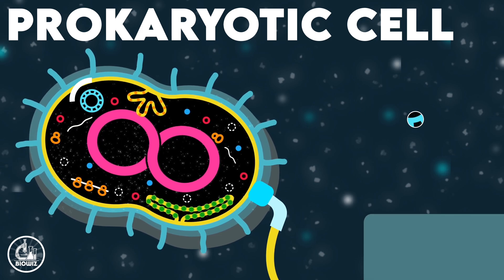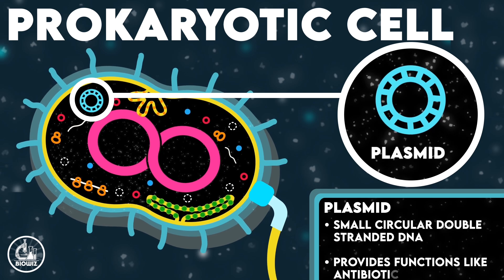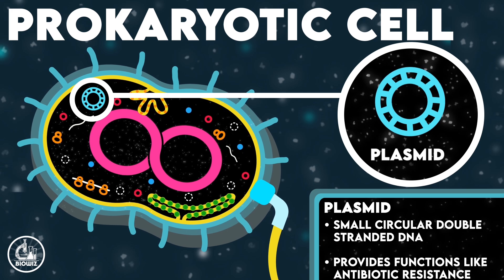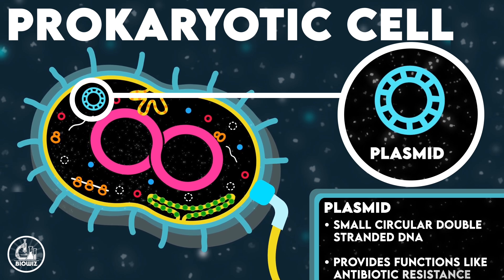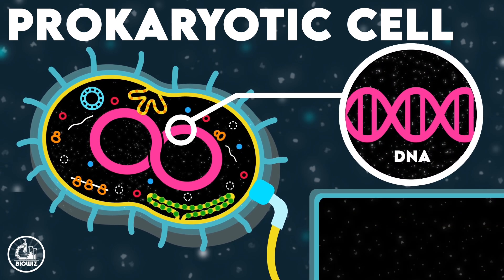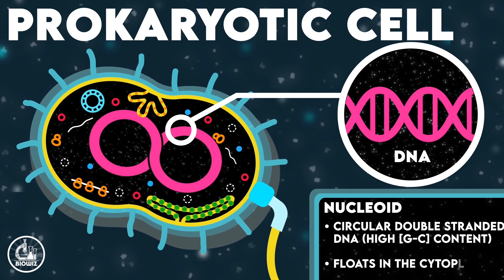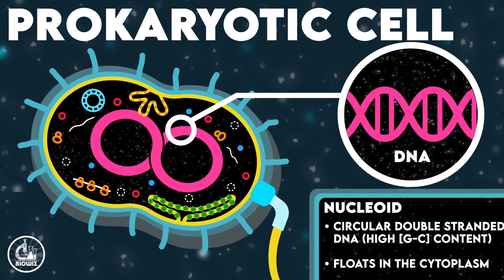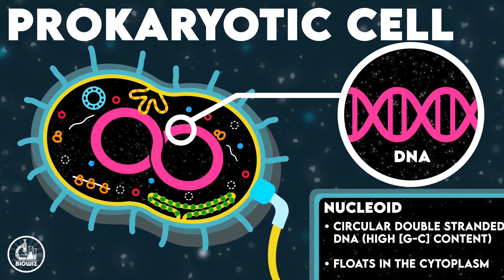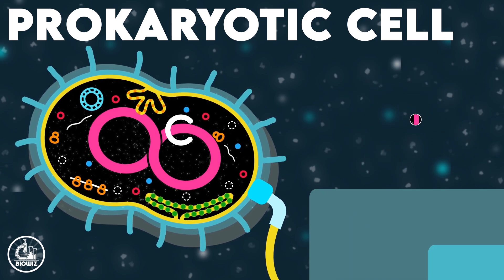Plasmids are small, circular double-stranded DNA molecules which are extra-chromosomal and are not essential for the survival of the cell. Plasmids provide additional features to the cell, like antibiotic resistance. The main genomic DNA also floats in the cytoplasm of the cell. This DNA is circular and double-stranded and is called the nucleoid. In the prokaryotic genome, the number of GC base pairs is more than the number of AT base pairs.